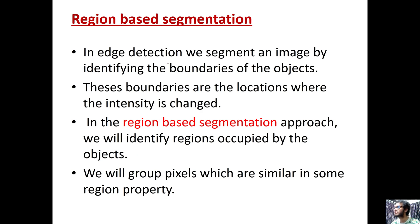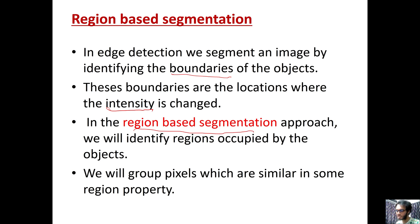In region-based image segmentation, we can detect the image and boundary location. From the boundary location, we can identify the intensity. The region-based segmentation approach groups similar pixels. A pixel is similar to others in the same region, based on a defined criteria.